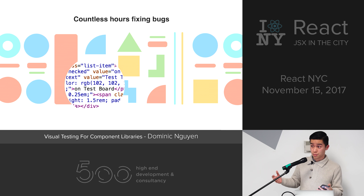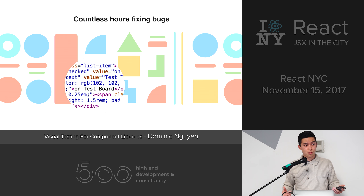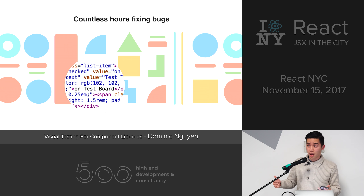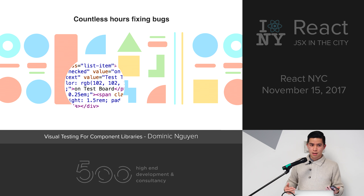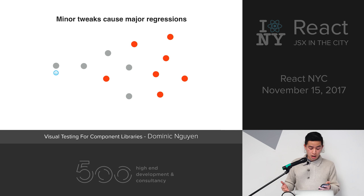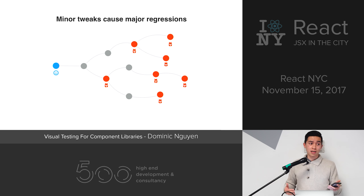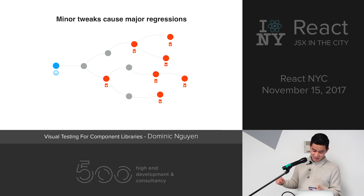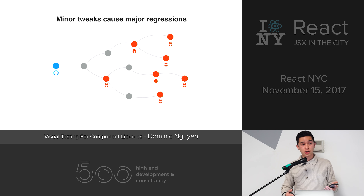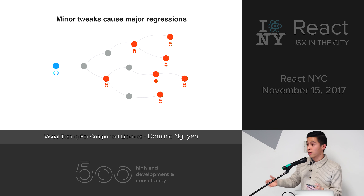Sometimes bugs are obvious — rogue CSS is pretty notorious for ruining layouts. Sometimes they're not: a border radius change here, a color change there. They're kind of imperceptible, but they build up over time. And most often, what seem like minor tweaks result in pretty major bugs — bugs you're going to have to fix. With teams moving toward continuous integration and heavier front ends, pinpointing UI regressions is harder than ever before.